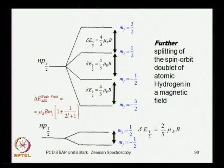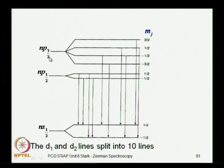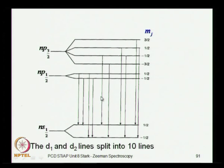The D1 and D2 lines split into very many lines, and the same thing will happen to all alkali atom spectra — rubidium, or anything in the first group. The np3/2 splits into 4 levels: J=3/2, so MJ goes from -3/2 to +3/2 in steps of 1, giving MJ = -3/2, -1/2, +1/2, +3/2. The np1/2 splits into 2 levels corresponding to MJ = -1/2 and +1/2. The ns1/2 also splits into 2 levels: MJ = +1/2 and MJ = -1/2. The D1 and D2 lines split into 10 lines in total.